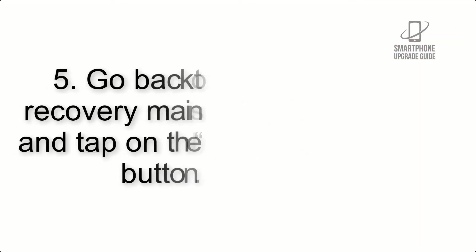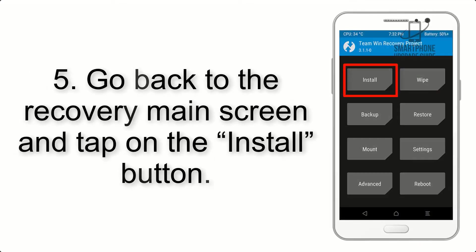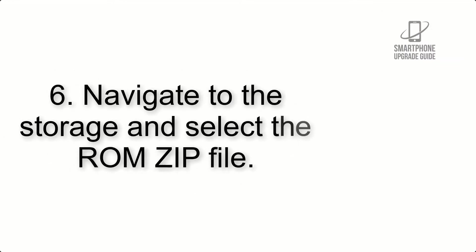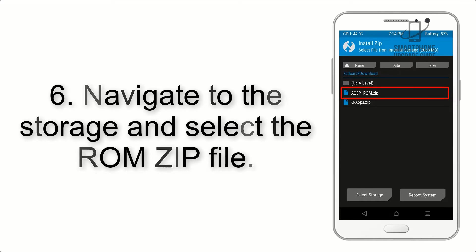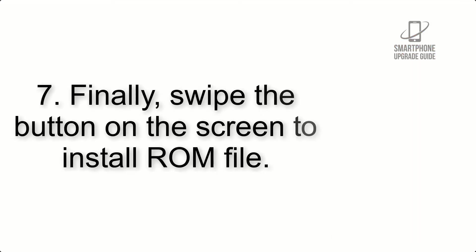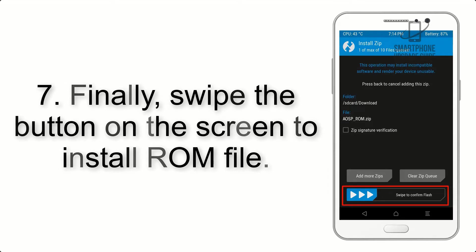Step 4: Swipe the button to wipe the device. Step 5: Go back to the recovery main screen and tap on the Install button. Step 6: Navigate to the storage and select the ROM zip file.